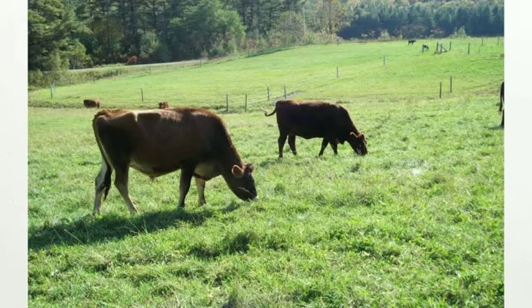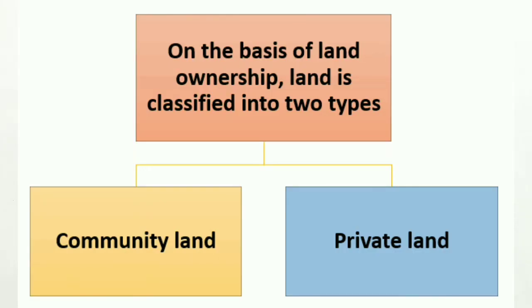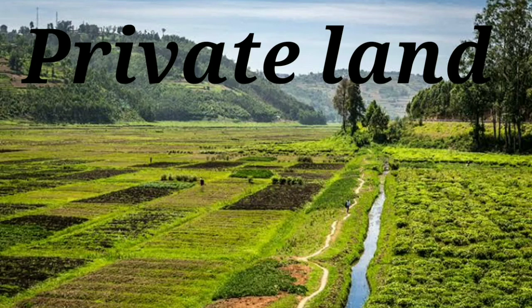This is basically termed as land use. As per the ownership of land, the land is classified into two types: community land and private land. Private land is the land which is owned by an individual and is basically used only by that person and their family members.